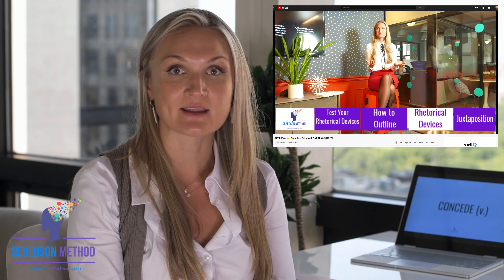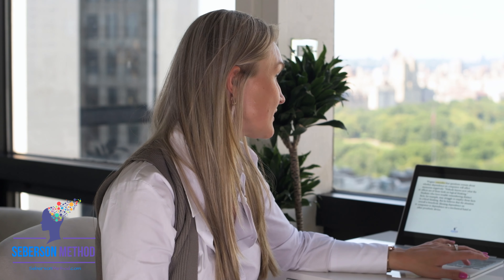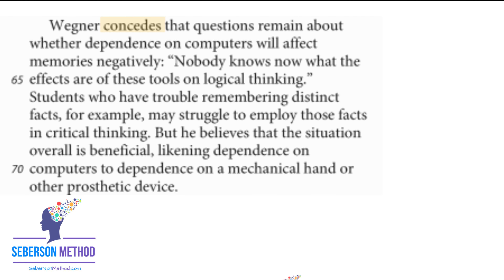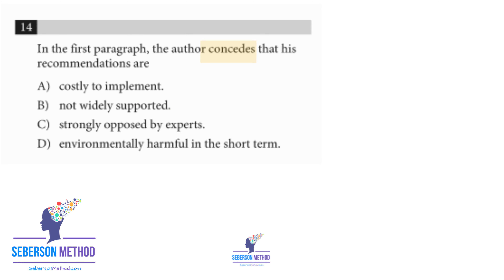Next is one of my favorite verbs: to concede. On the SAT essay, we have something called concession, a rhetorical device where the author agrees with the audience ahead of time. To concede means to unwillingly agree. Examples: 'Wagner concedes that questions remain about whether dependence on computers will affect memories negatively.' 'It identifies and concedes a crucial shortcoming of Lincoln's argument.' 'The author concedes that his recommendations are...' Please remember: to concede means to unwillingly agree.